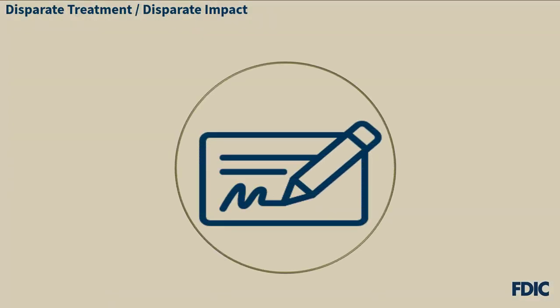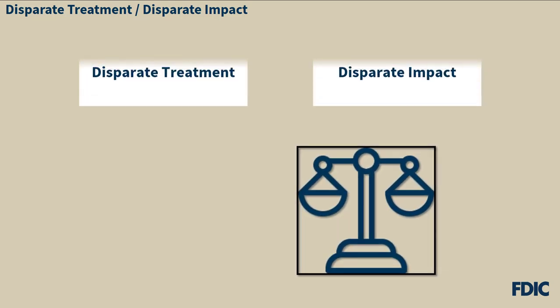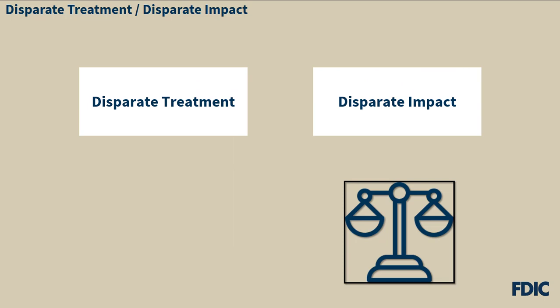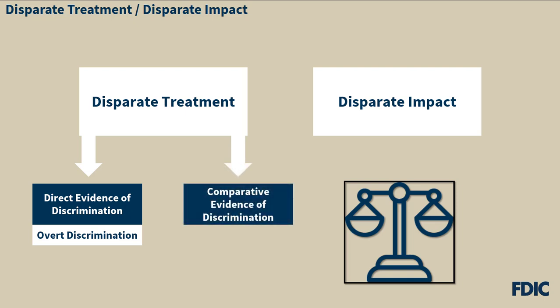At this point, we've covered the fair lending laws and the practices that they prohibit. But to better understand lending discrimination, it's important to consider how it's evaluated. For that, we look to court precedent. Generally, the courts have recognized methods of proving lending discrimination, which include disparate treatment and disparate impact. Disparate treatment can arise in two types of situations: one where there is direct evidence of discrimination, referred to as overt discrimination, and one where there is comparative evidence of discrimination.